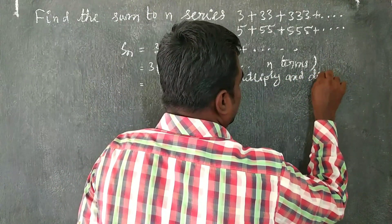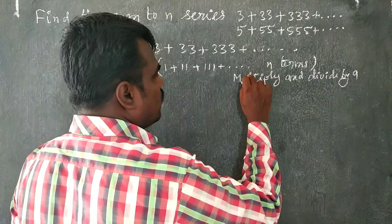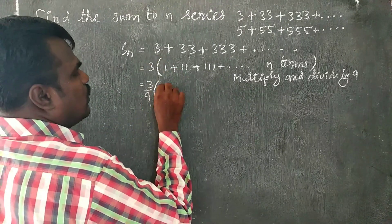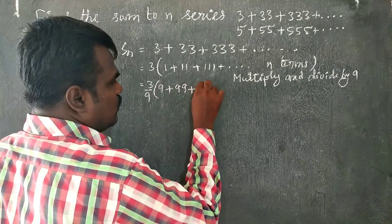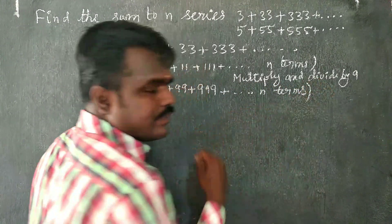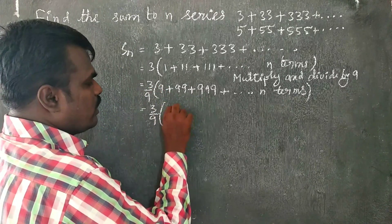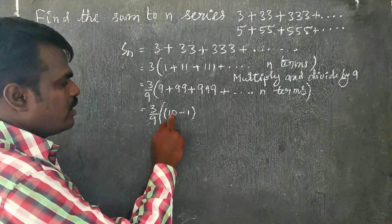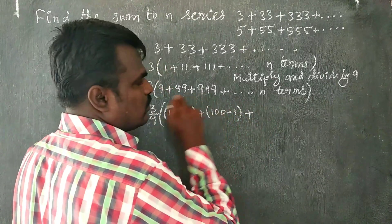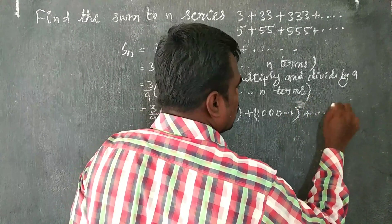So Sn equals 3 plus 33 plus 333 and so on up to n terms. First, we multiply and divide by 9. So 3 by 9, multiplied by 9, gives us 9 plus 99 plus 999 and so on up to n terms.